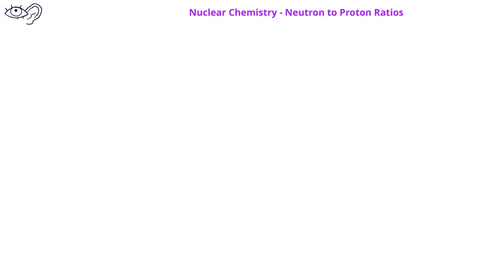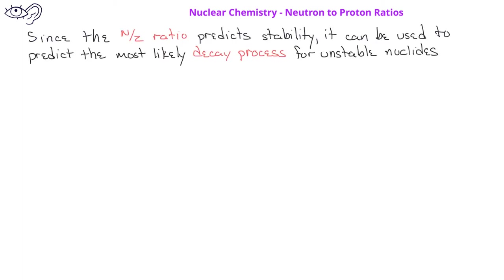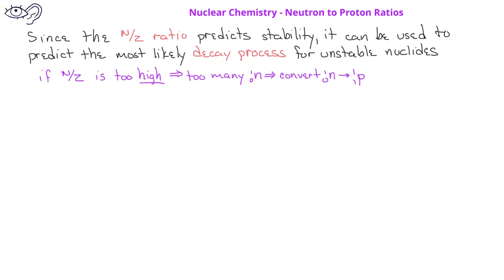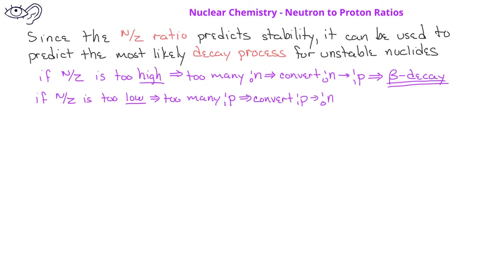Since the neutron-to-proton ratio predicts stability, we can use it to help predict the most likely decay process. If the neutron-to-proton ratio is too high — in other words, there are too many neutrons in the nucleus — we'll need to convert a neutron into a proton. As we learned in a previous video, this can be achieved through beta decay. However, if the neutron-to-proton ratio is too low, such as when there are too many protons, we can convert a proton to a neutron. This can be done either through positron emission for lighter nuclides or through electron capture for heavier nuclides.